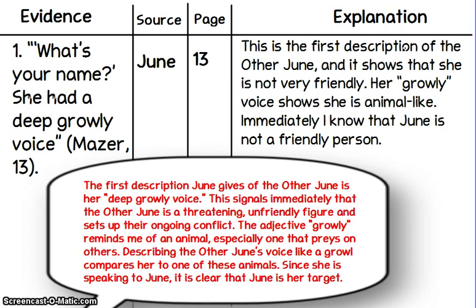I'd like to model for you finding a piece of evidence, and I decided to start with the other June. I found evidence on page 13, when June meets the other June in swimming class. The other June says to her, 'What's your name?' and she had a deep, growly voice. I chose this because it's the first description that June gives of the other June, and this description immediately signals to me, the reader, that the other June is a threatening, unfriendly figure and it's setting up their ongoing conflict.